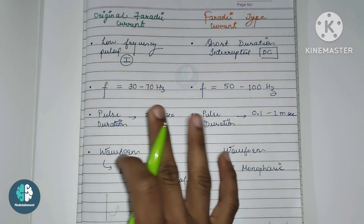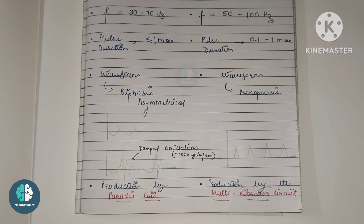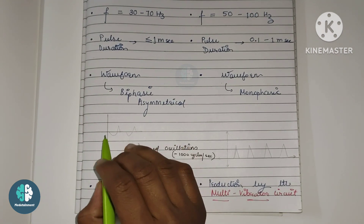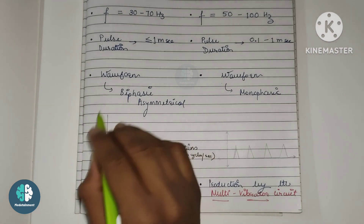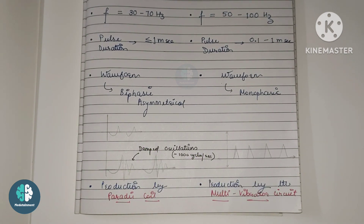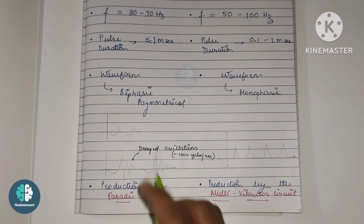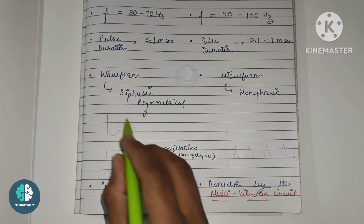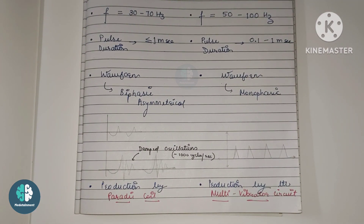Now discussing waveforms: the original faradaic current has a biphasic asymmetrical waveform. It looks like a graph with long duration and short intensity in one part, and high intensity with short duration in another. This is the waveform produced by the faradaic coil. Later, an advanced smart bistro faradaic coil came up, producing damped oscillations of about 1000 cycles per second. So the original faradaic current is produced by the faradaic coil.